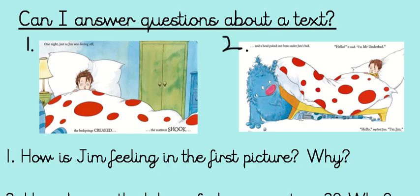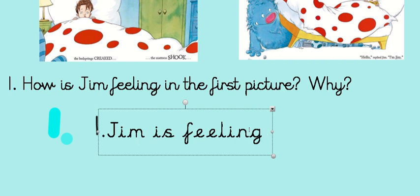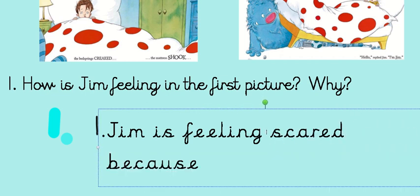Today I've got a bit of a quiz for you to see how much you've remembered from the story. So the first question is about this page here. Shall we read it together? How is Jim feeling in the first picture? Why? So on your sheet of paper I'd like you to write the number 1 because it's the first question, and then I'd like you to write me an answer in a full sentence. Jim is feeling scared because there is a strange noise.